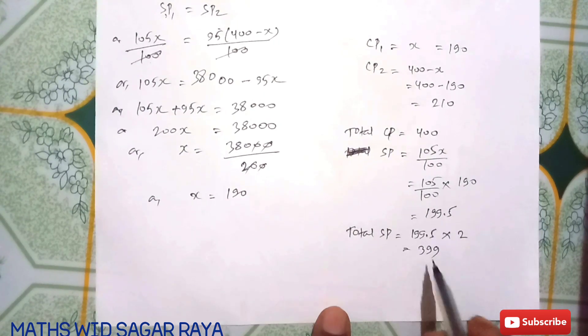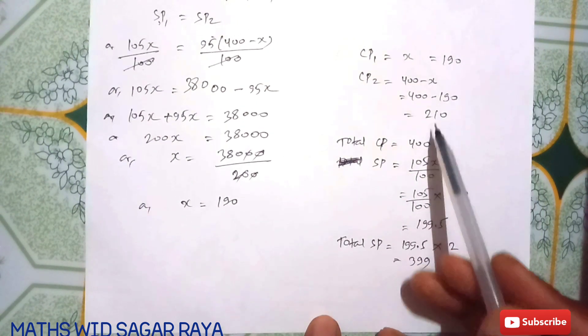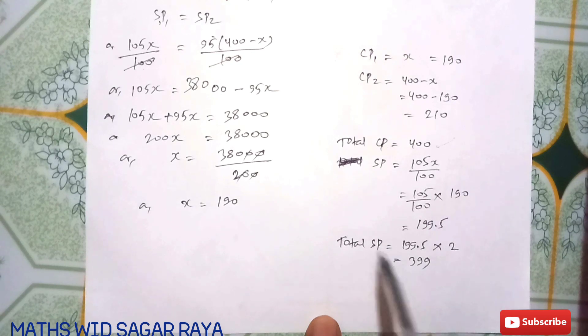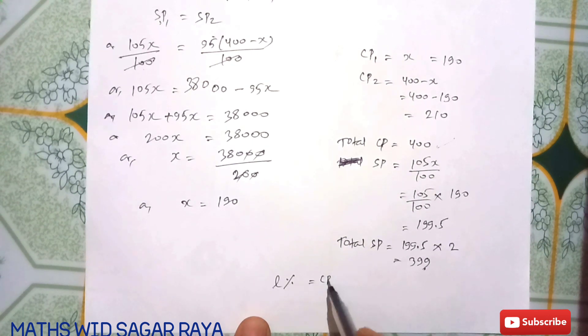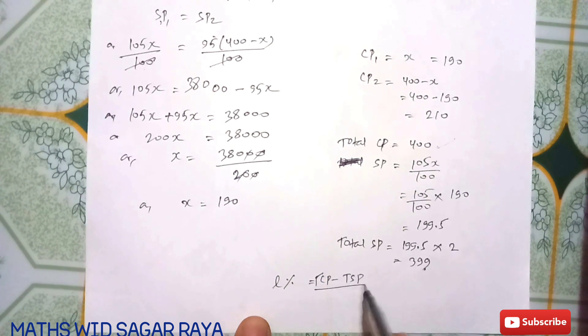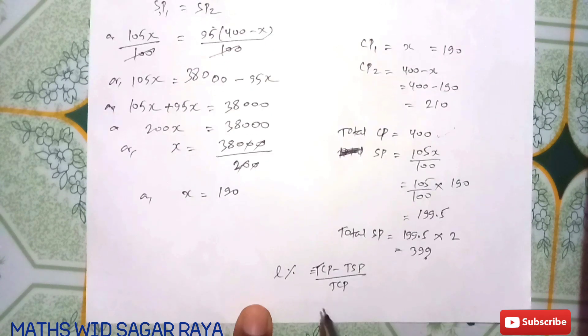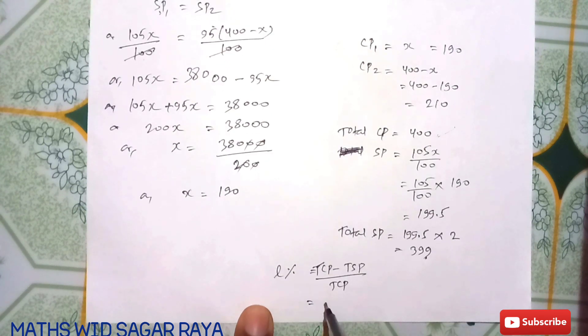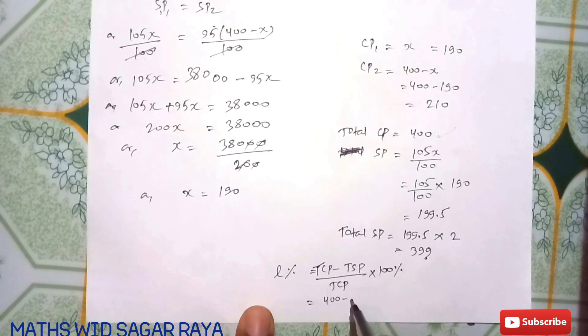Compare: total CP is 400 and total SP is 399. SP is smaller, so there is a loss. Loss percent = (Total CP - Total SP) / Total CP × 100%.